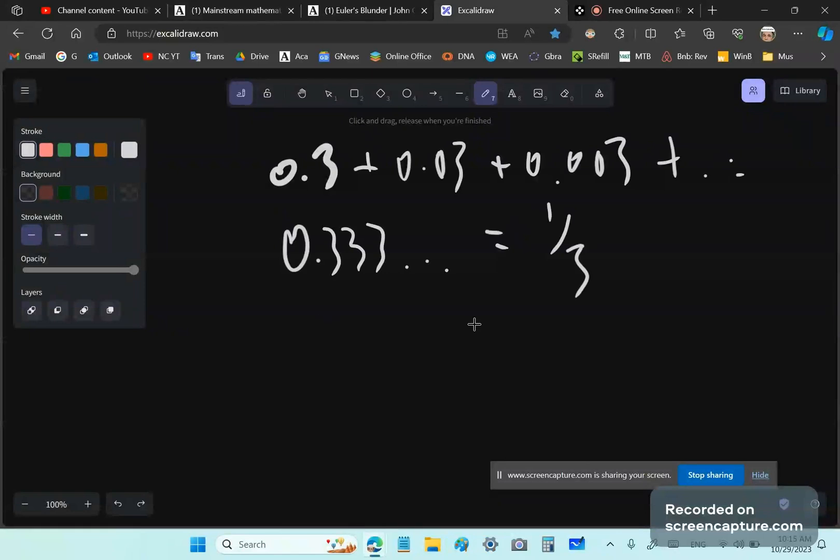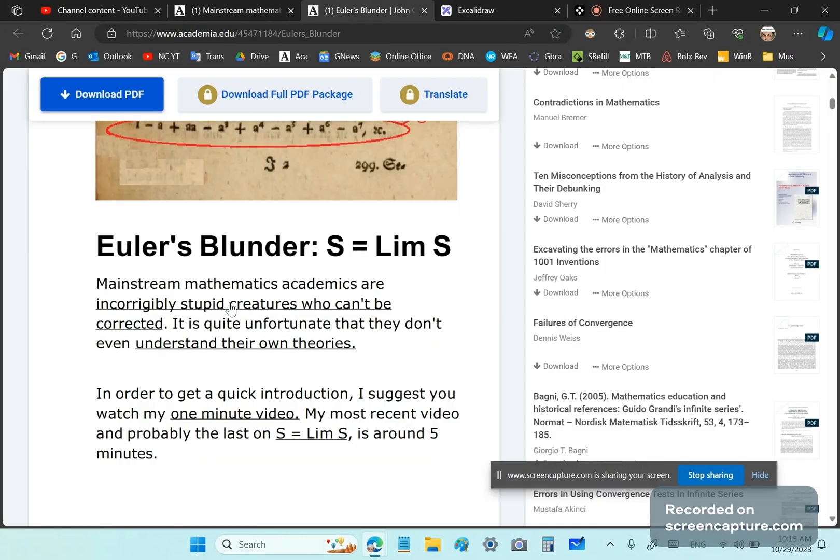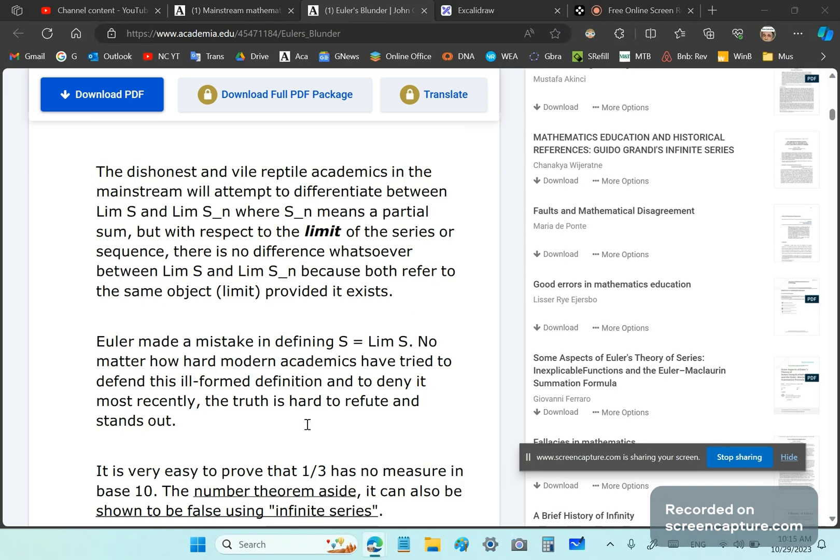So it's utterly nonsense to take a series and define it as equal to its limit. That means what Euler did was he took a series like that and he defined this series 0.333 dot dot dot as equal to its limit. That's total garbage. It's never equal to its limit. And in fact, there's a theorem that proves one third has no measure in base 10. This is a base 10 measure. A third cannot be measured in base 10, people.